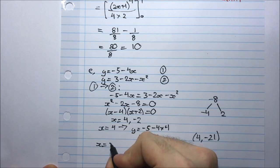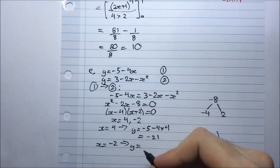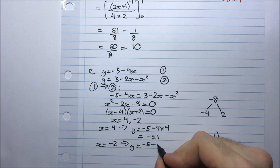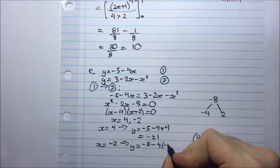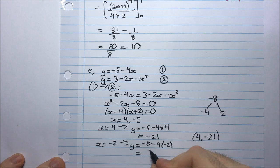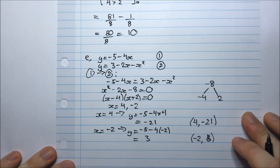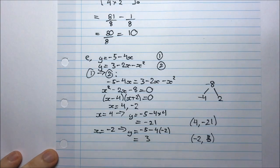And if I substitute -2 into 1, I have y = -5 - 4(-2). So that's -5 + 8 which is 3. And so my other point would be (-2, 3). And so these two points here are my points of intersection. Great.